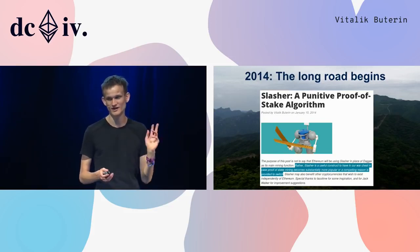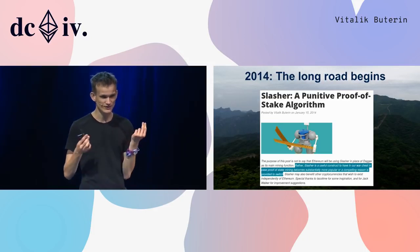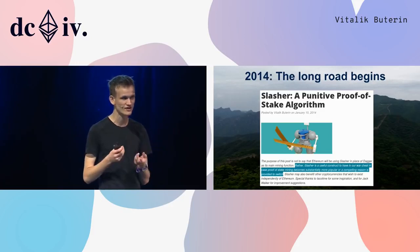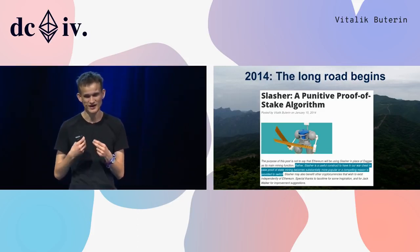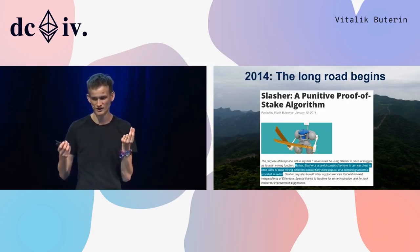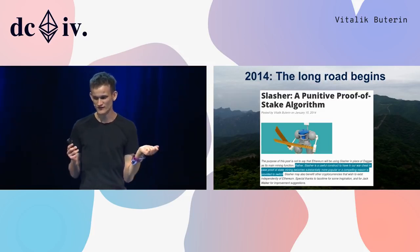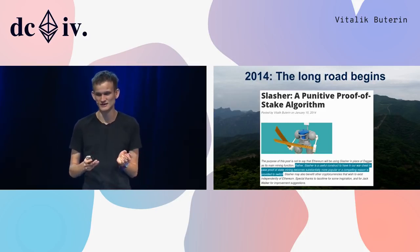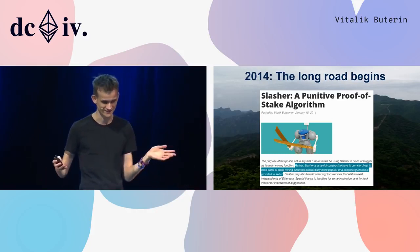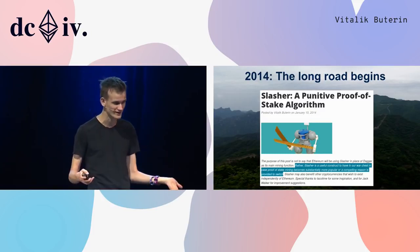The road to proof of stake started in 2014 with a blog post I published in January describing an algorithm called Slasher, which introduced the most basic concept in a lot of proof of stake algorithms: if you get caught doing something wrong, this can be proven and you can be penalized for it. At the time I believed that 'Slasher is a useful construct to have in our war chest in case proof of stake mining becomes substantially more popular, but we're not doing that yet.'